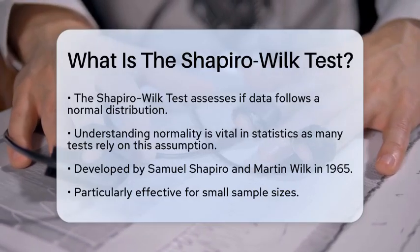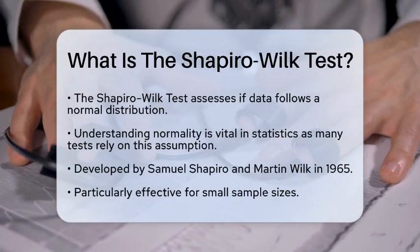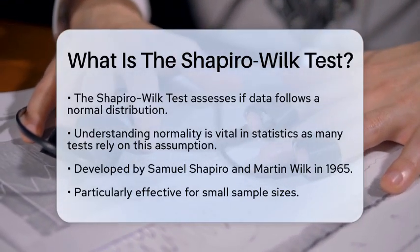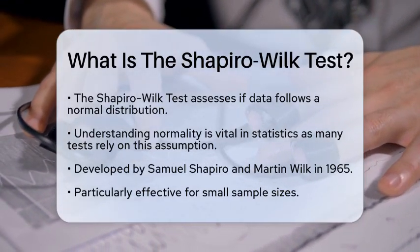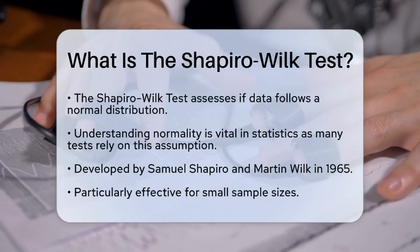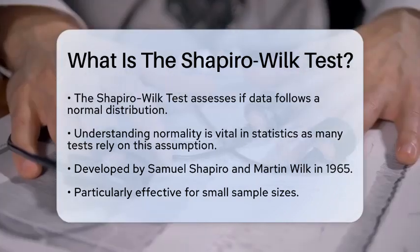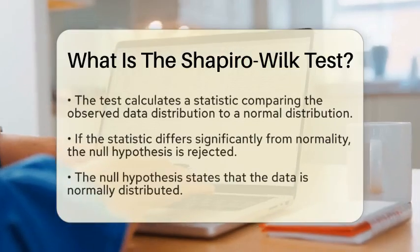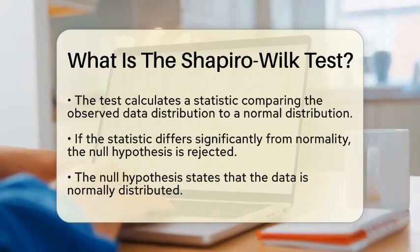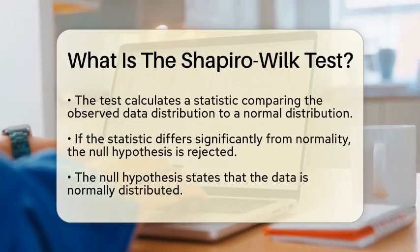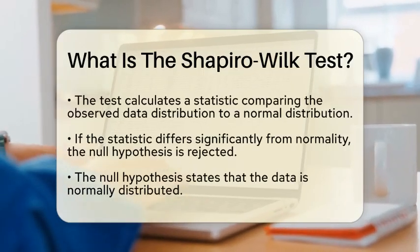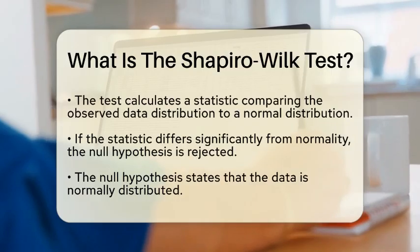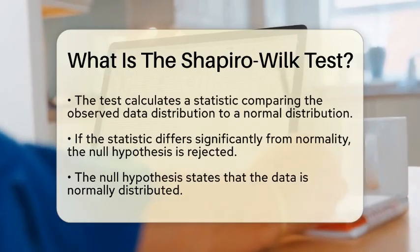Developed by Samuel Shapiro and Martin Wilk in 1965, this test is specifically designed to assess whether a sample comes from a normally distributed population. It is particularly useful for small sample sizes, making it a popular choice among statisticians.